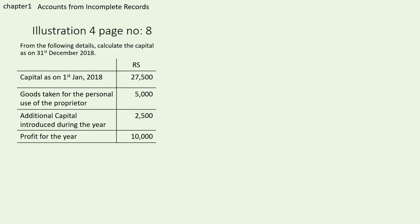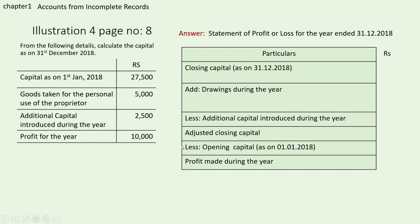Now the answer part of the problem. First write the heading: Statement of Profit or Loss for the year ended 31st December 2018. The format has particulars and rupees. We start with closing capital, add drawings during the year, then minus the additional capital introduced during the year to get the adjusted closing capital. From that, minus the opening capital — you may get profit or loss. In this problem it is clearly given as profit, so we write profit made during the year.